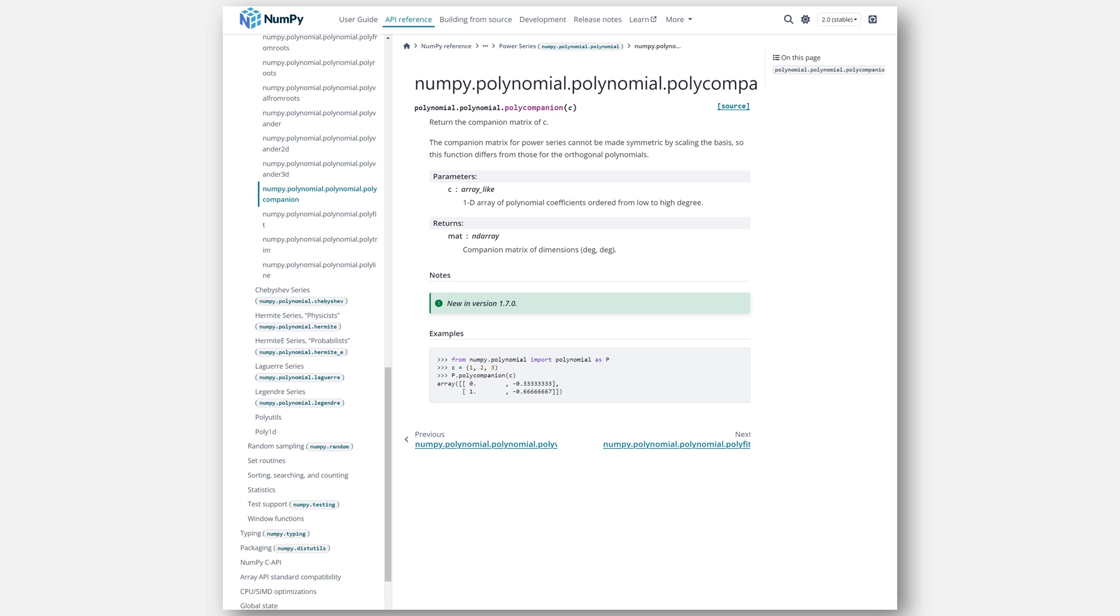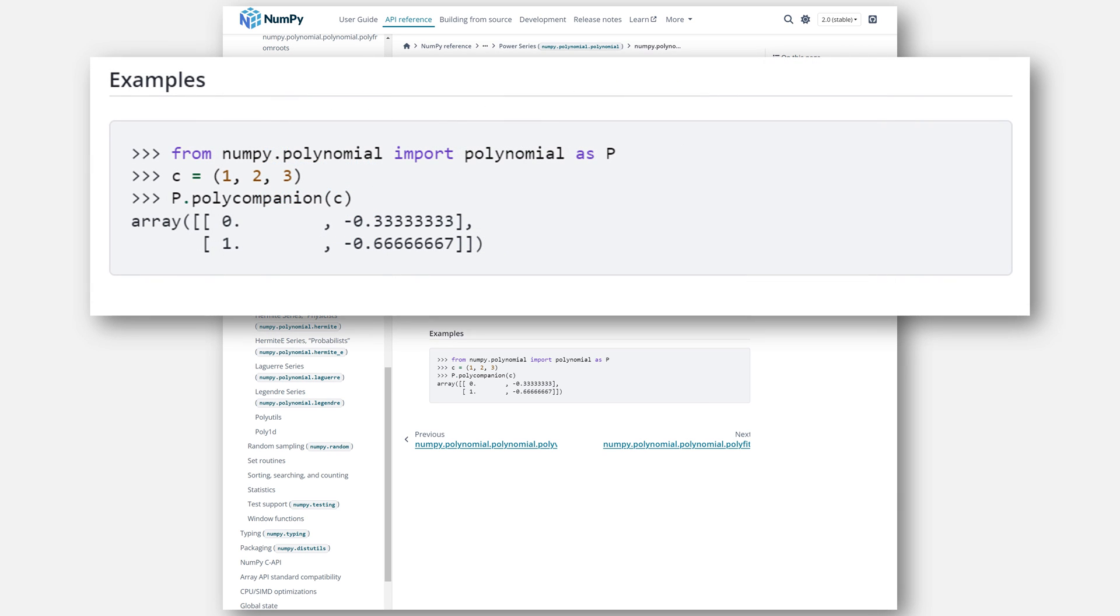Well, NumPy has a function called polycompanion, which, given this example of the polynomial of 3x squared plus 2x plus 1, the first step that actually does is normalize everything, dividing by the leading coefficient.